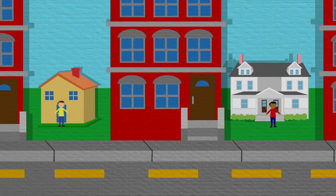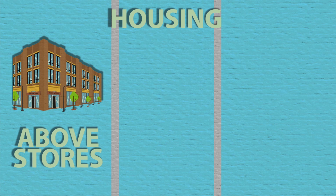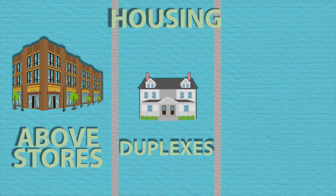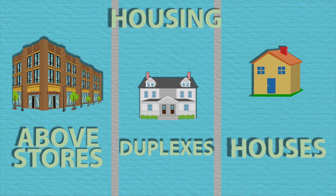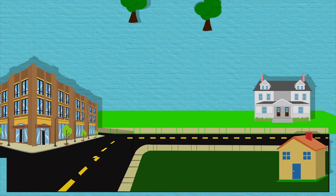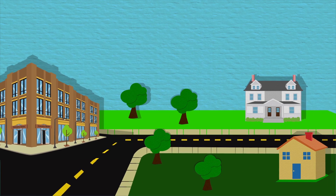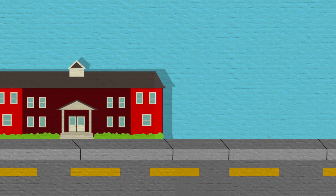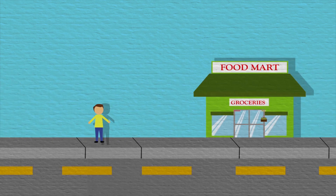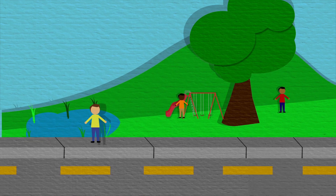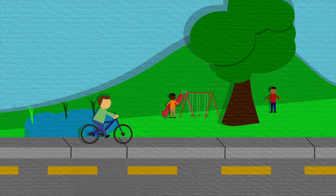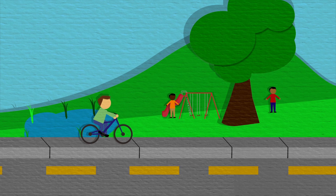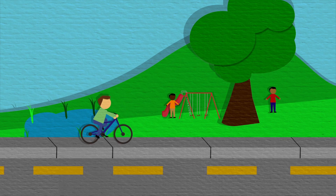I have lots of friends near me. Some live above stores. Some live in homes that are connected. And some have yards where we play. And because there are lots of people in my neighborhood, the buildings are fun to look at. I can walk to school, or the store, or the park because they are close by. I feel safe riding my bike and get lots of exercise.